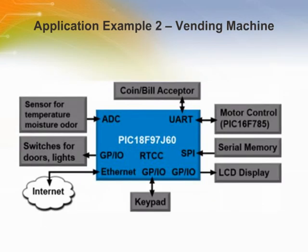In this example, a vending machine is connected via Ethernet to the Internet. Real-time information such as the amount of money, inventory status, or operating condition of the machine can be streamed to any location with an IP address. The added cost is more than compensated by the improved efficiency made possible through the IP connection. Price changes could also be done remotely.